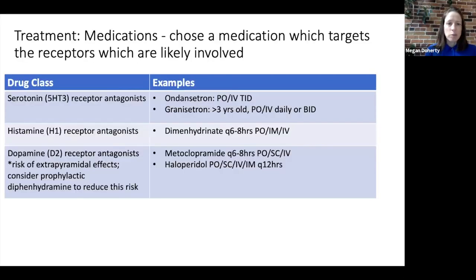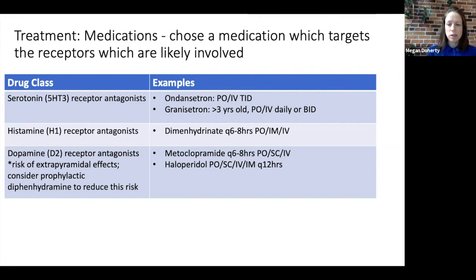When looking at the medications, we think about which receptors they target — this should be driven by what we think is the underlying cause for the nausea. Serotonin receptor antagonists that work on 5-HT3 receptors include granisetron, ondansetron, and others in this category. Antihistaminergic agents comprise a large class of medications that are all considered equally effective. Dopaminergic agents such as metoclopramide and haloperidol can be considered if the chemoreceptor trigger zone is involved, and they also work at the vomiting center. Always be aware of the risk of extrapyramidal effects and consider prophylactic diphenhydramine to reduce this risk, particularly with metoclopramide.